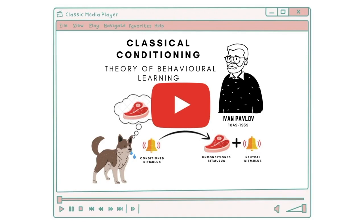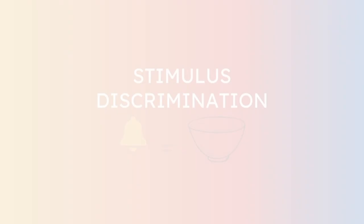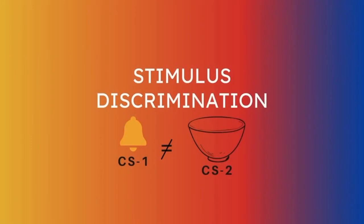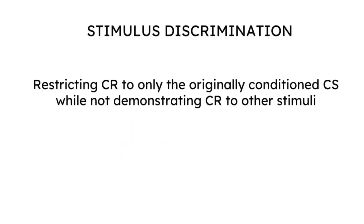Having said that, let's move on to what we cover in today's video: the concept of stimulus discrimination, which is the opposite of stimulus generalization. Under stimulus discrimination, the animal can clearly distinguish the conditioned stimulus from any other stimulus it has not been conditioned to, allowing it to restrict its conditioned responses only to the conditioned stimulus and not to any neutral stimulus.